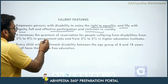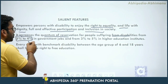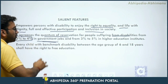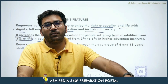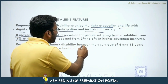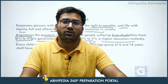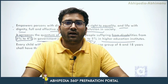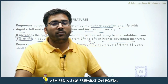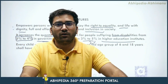Second, it increased the quantum of reservation for people with disabilities from three to four percent — that is a one percent increase in government jobs, and a two percent increase in government educational institutions for the vulnerable sections, specifically for those who are disabled.